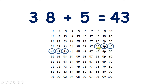Now, you might be wondering — we're adding 5, so why do we have 6 circles rather than 5? Well, I circled the number 38 when I hadn't added anything to it, but I counted on 1, 2, 3, 4, 5 numbers, so I added 5.